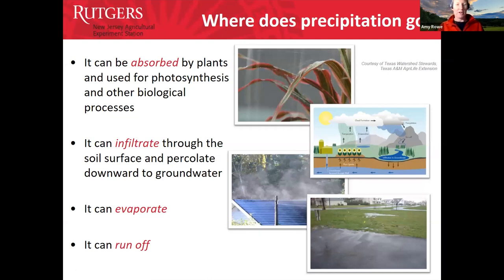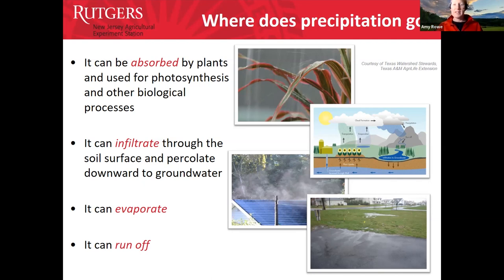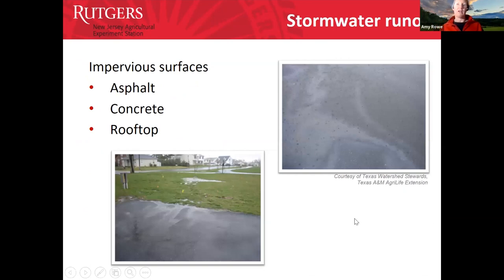I want to give some background on stormwater itself, starting at the beginning. When we have precipitation, several things can happen: the water can be taken up by plants for their biological processes, it can infiltrate down into the soil all the way to groundwater, it can evaporate back up into the atmosphere, or it can run off.